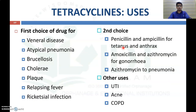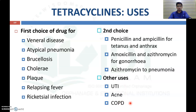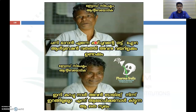Uses of tetracycline: it is the first choice of treatment for venereal diseases, atypical pneumonia, brucellosis, cholera, plague, relapsing fever, and rickettsial infections. Tetracycline is the second choice of drug for anthrax and tetanus along with penicillin and ampicillin, and is a second choice for gonorrhea and atypical pneumonia along with azithromycin.